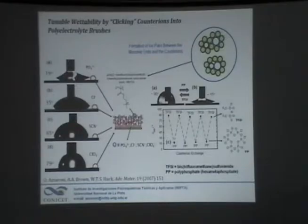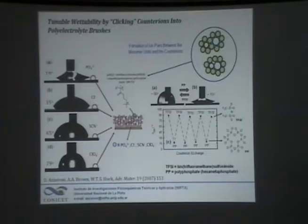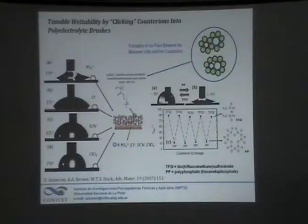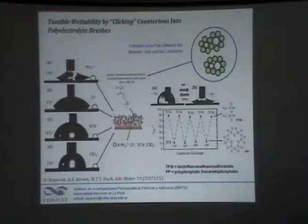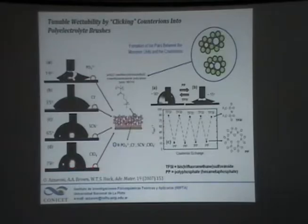The good thing about brushes is that they are fairly anchored. Whatever we do there, we need to perform harsh treatment to remove them. But if we just play around with simple soft chemistry, nothing will happen. Depending on the kind of monomer units you grow on the surface, you can play around with very interesting ion-pairing interactions — creating ion pairs among the monomer units from an electrolyte solution — and the nature of the ion pair is turning the hydrophobic or hydrophilic behavior of the surface.